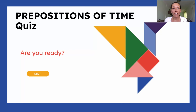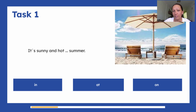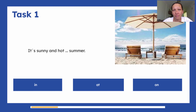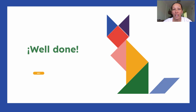And now let's have some practice. I've got a special quiz for you — prepositions of time quiz. Are you ready? Let's start! Task number one: it's sunny and hot summer. What preposition will you choose — in, at, or on? It's a season, so with seasons we use the preposition 'in'. Well done!